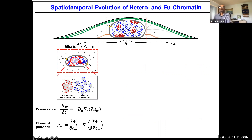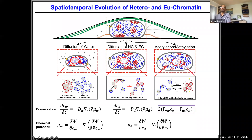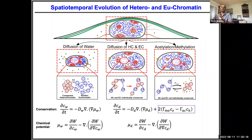The euchromatic state is open, the heterochromatic state is condensed. If you want to convert eu- to heterochromatin, you need to move water. We consider water diffusion. The order parameter — the difference between hetero and eu — is driven both by energy and by the acetylation and methylation rates. Methylation increases the order parameter (promotes heterochromatin); acetylation does the opposite. There is also a standard diffusion driving force. A key additional term I've added governs the domain size and stiffness dependence.